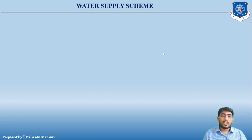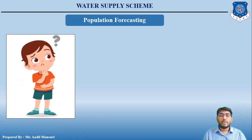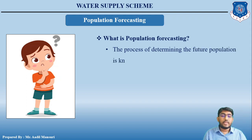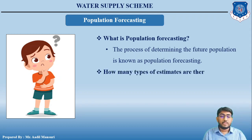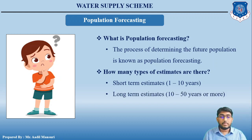Today we are going to start with a new topic: population forecasting. The process of determining the future population is known as population forecasting. There are two types of estimates: short-term estimates, which vary for 1 to 10 years, and long-term estimates, which vary for 10 to 50 years or more.